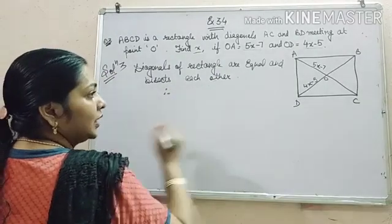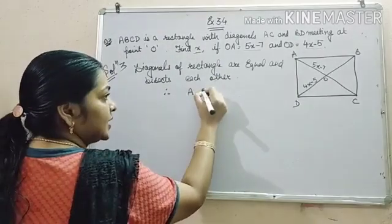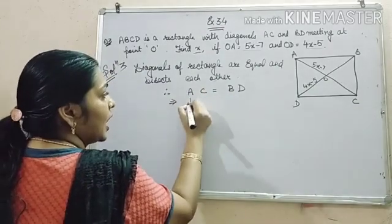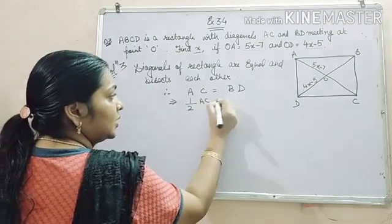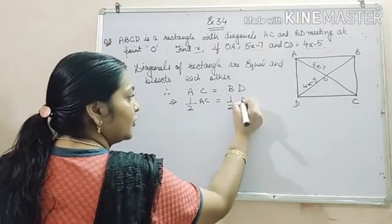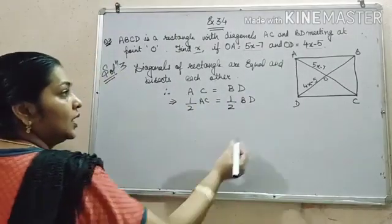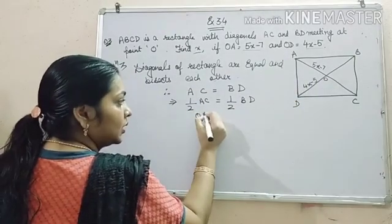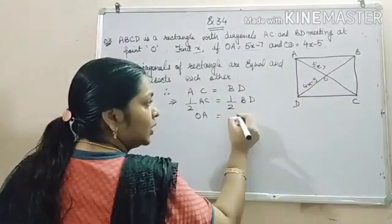Therefore, what you will get from here? AC is equal to BD. Also, half of AC is equal to half of BD. Now, half of AC is OA and half of BD is equal to OD.